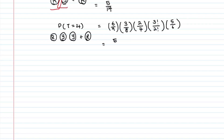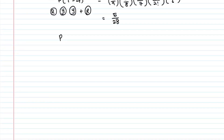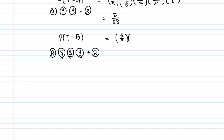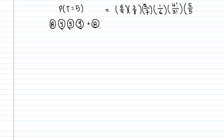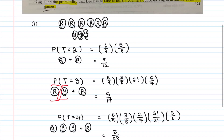For T=4, after the permutations, multiply by 5/6 for the final red counter, giving 5/28. The last case T=5: he takes all three yellows before his second red — 6/9 times 3/8 times 2/7 times 1/6, then 4!/3! = 4 permutations since three yellows are identical. Multiply by 5/5 for the last red, giving 1/21. So the four probabilities are: P(T=2)=5/12, P(T=3)=5/14, P(T=4)=5/28, P(T=5)=1/21.